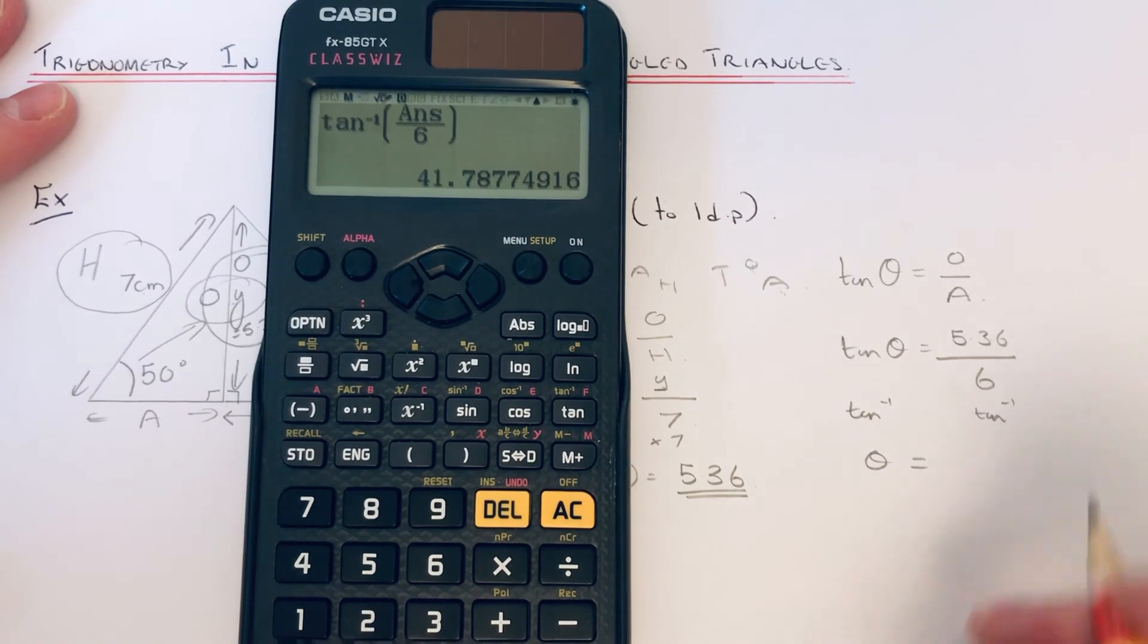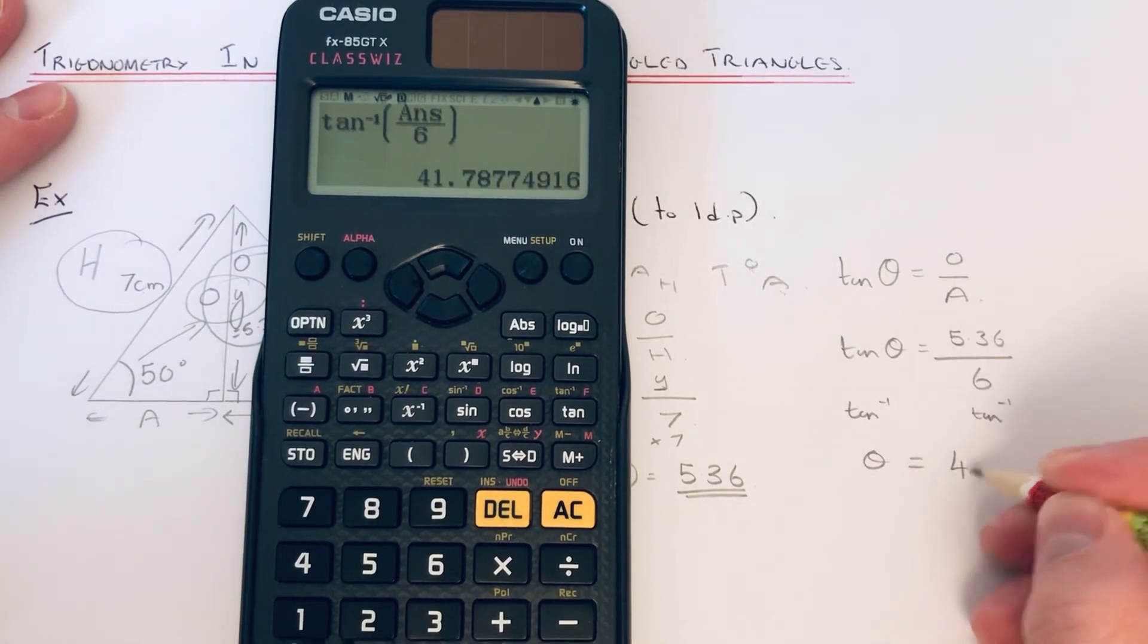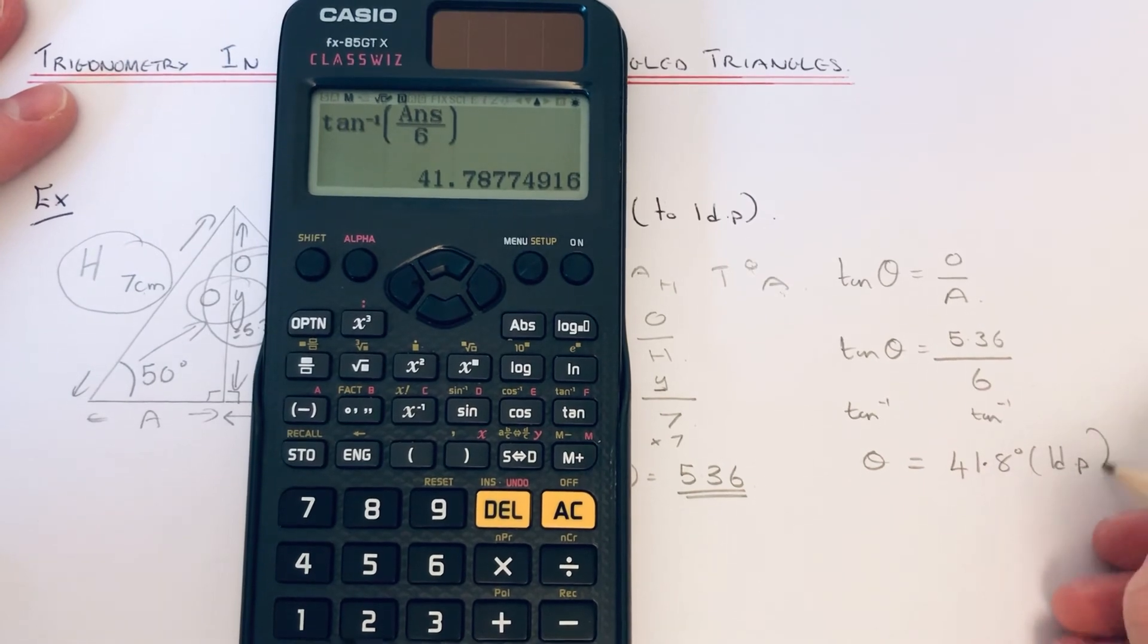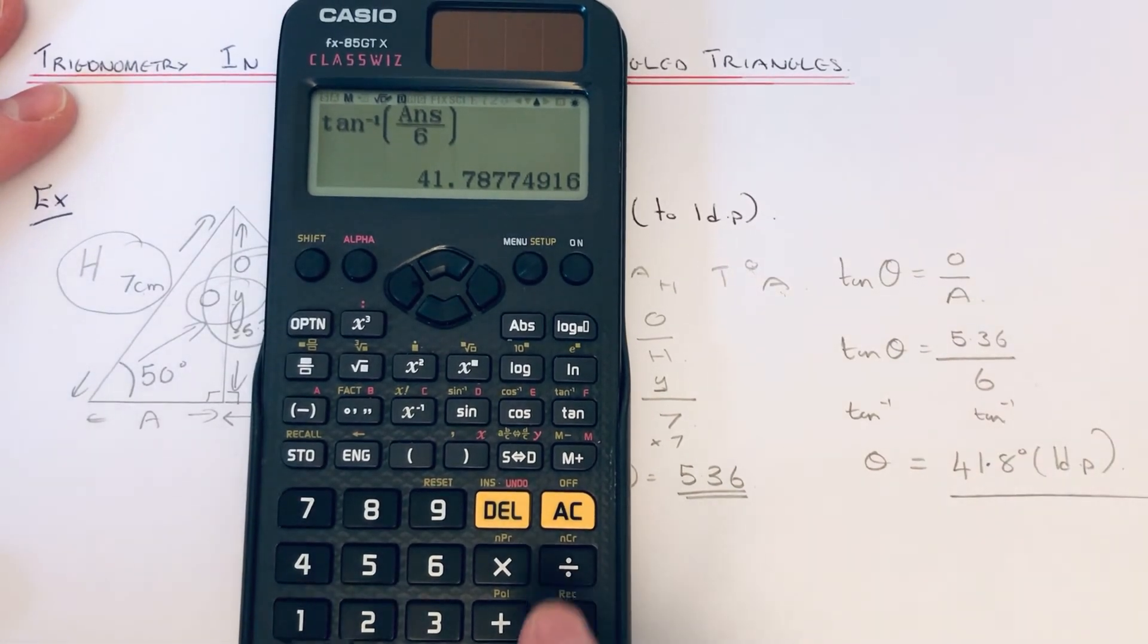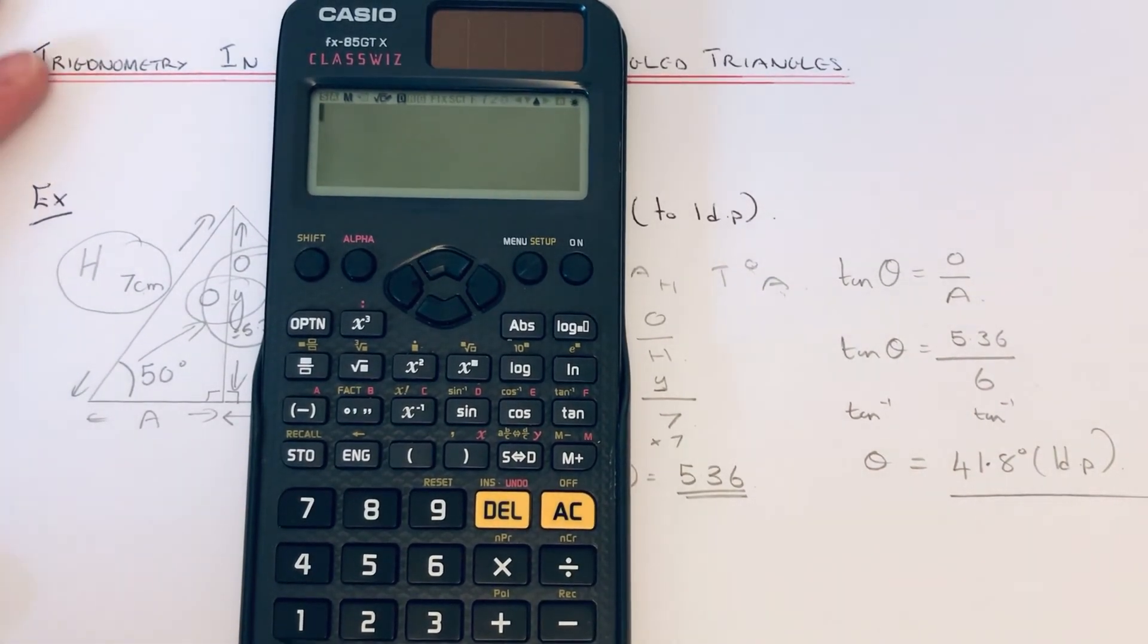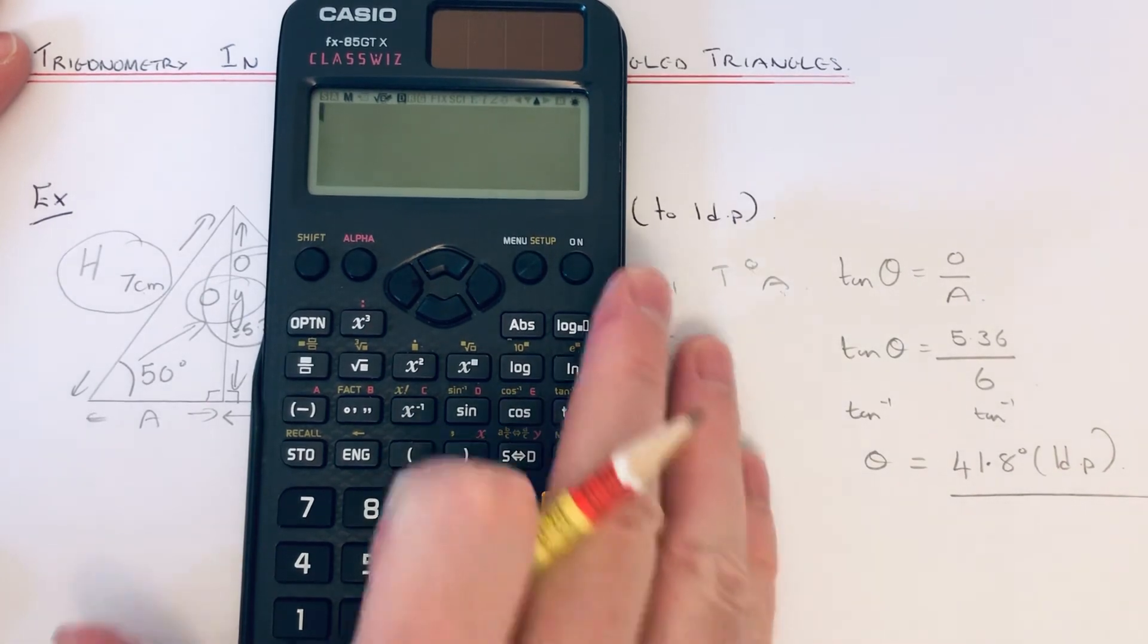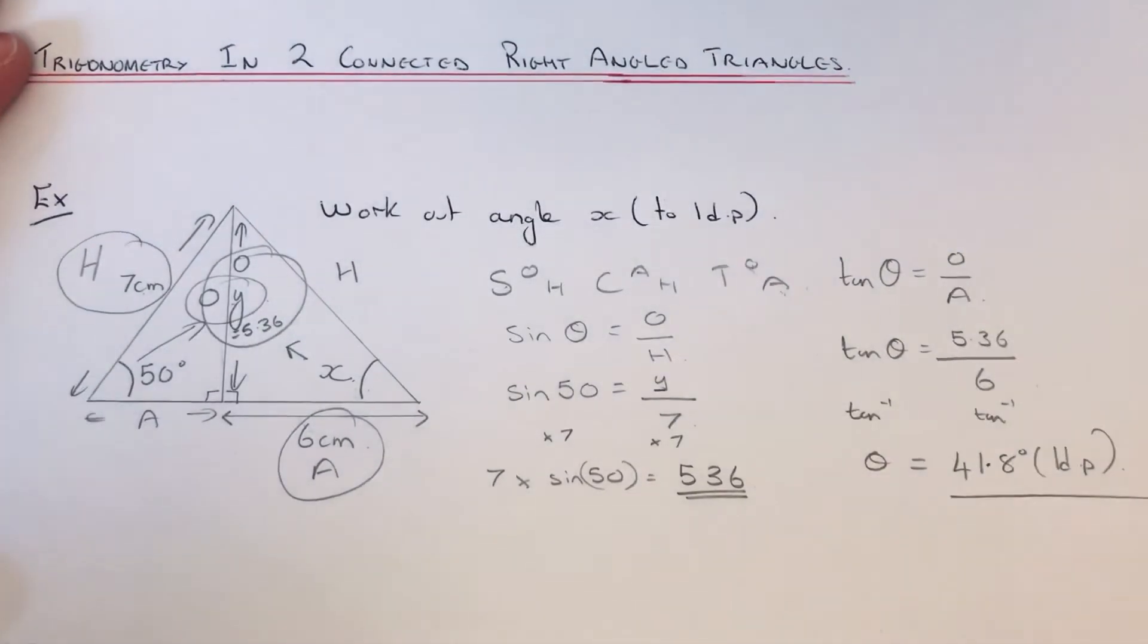And we get an angle of 41.8 degrees to 1 decimal place. I hope you like this video. If you did, make sure you like and subscribe, and thanks for watching guys. Bye bye.